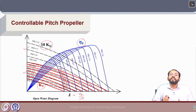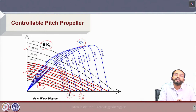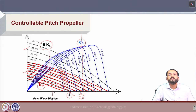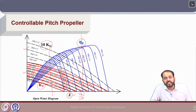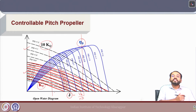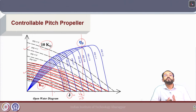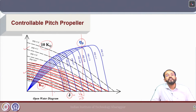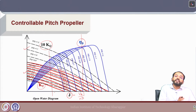Depending on the value of J, which gives the propeller loading condition, the open water efficiency will have a specific value. For higher pitch ratios, the open water efficiency is high at high J values, but at lower J values, lower pitch ratios give higher efficiency. This forms the basis of changing the pitch for a controllable pitch propeller — in a specific operation condition, depending on the thrust requirement, one can change the pitch ratio to achieve different thrust and torque characteristics and optimum efficiency.